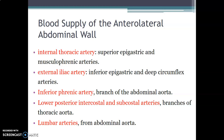The lower posterior intercostal and subcostal arteries also supply the anterior lateral abdominal wall and come from the thoracic aorta. Additionally, the abdominal aorta gives lumbar arteries that supply the anterior lateral abdominal wall. This is how you discuss blood supply: name the vessels and where they come from.